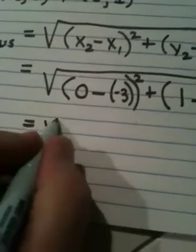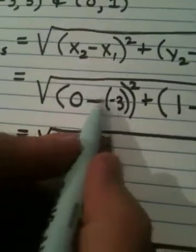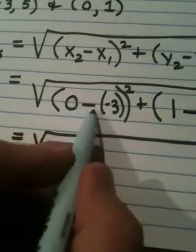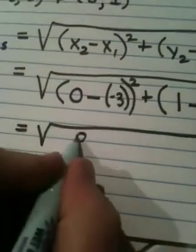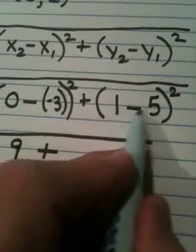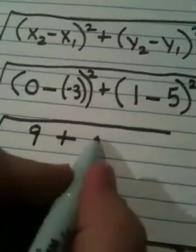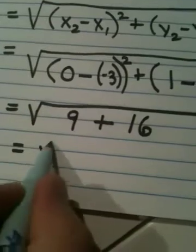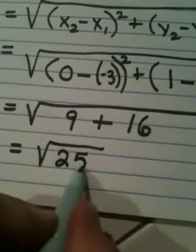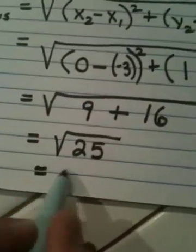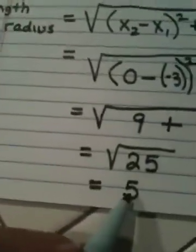So we have the square root of. Okay, inside here, minus minus is a plus. 0 plus 3 is 3. 3 squared is 9. Here, 1 minus 5 is negative 4. Correct? Negative 4 squared is a positive 16. This becomes the square root of 25, which is 5. Now, the length of the radius is 5. But that is not my answer.